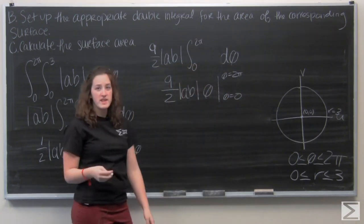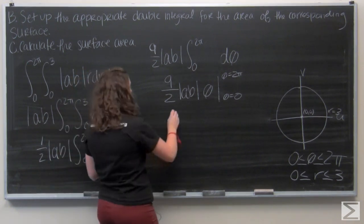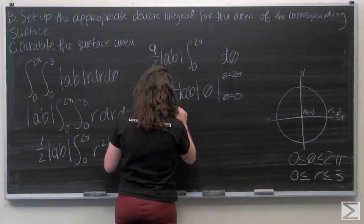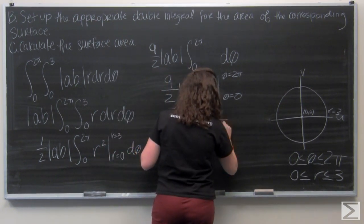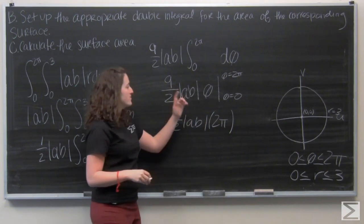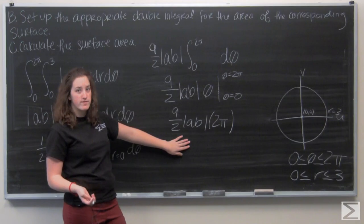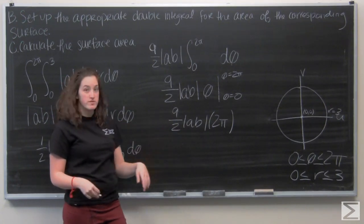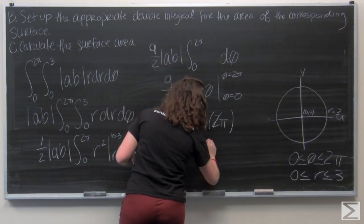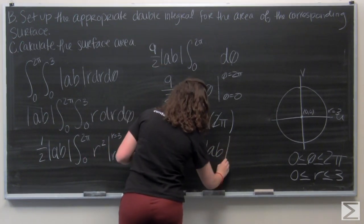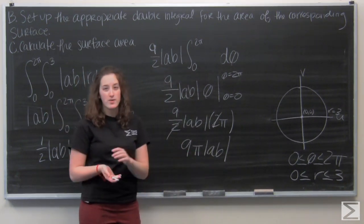Now I'm going to evaluate this from theta equals 0 to theta equals 2 pi. So let's go ahead and plug in 2 pi. And then when I plug in 0, I can see that the whole term drops out. So this is all I have for the answer to my integral. Let me go ahead and cancel out those twos. And I get that the surface area of my region is 9 pi times the absolute value of ab.